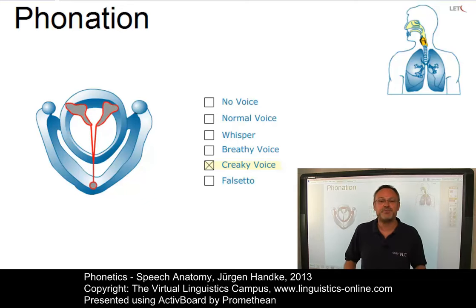Once the air passes through the trachea and the glottis, it enters a long tubular structure known as the vocal tract — here is the vocal tract, let's enlarge it a little bit. This is the main component where we articulate speech sounds. In the vocal tract, the airstream is affected by the action of several mobile organs: the active articulators.